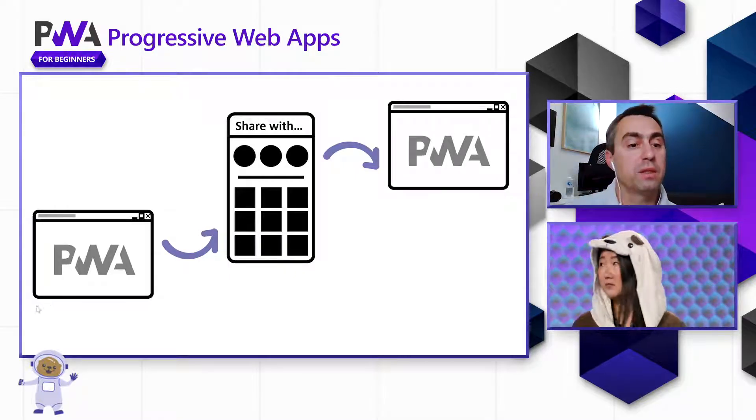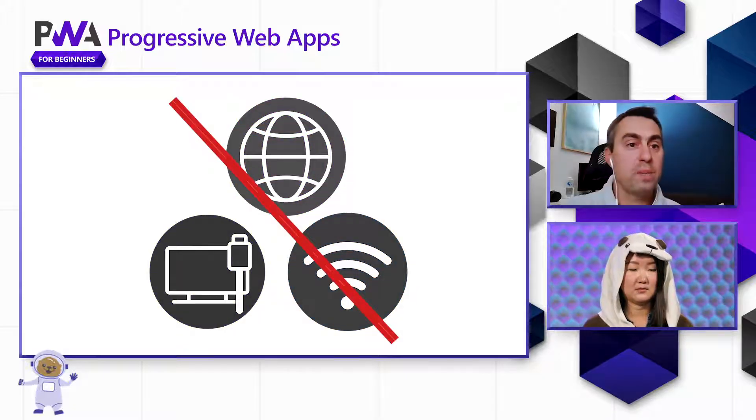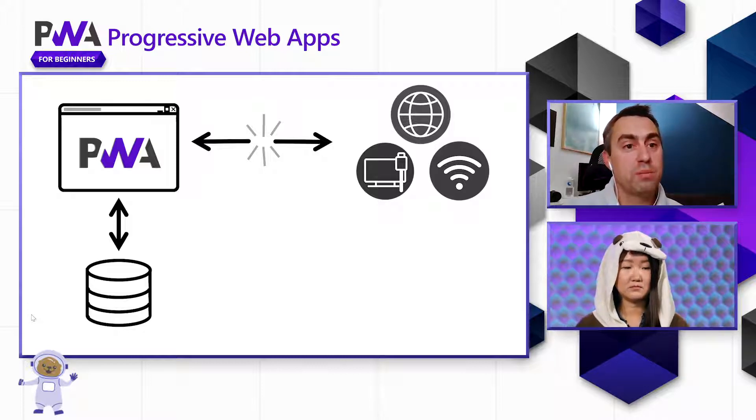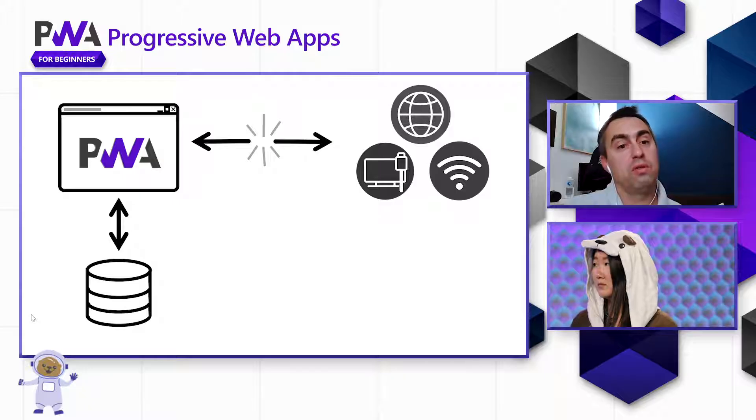Another example is offline support. Websites typically can't function offline — if you try to go to a website on a plane without internet access, you'll be greeted with a blank page. But if you install a PWA, it can keep on functioning even if you're offline, just like a regular app. The app can keep functioning offline by using something called the Service Worker, which can cache information in local storage, download things like movies or music or articles for offline viewing, and update data in the background on a regular basis.